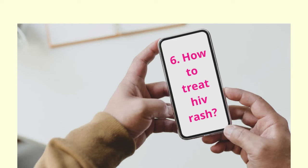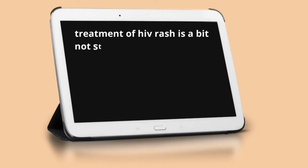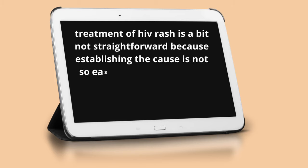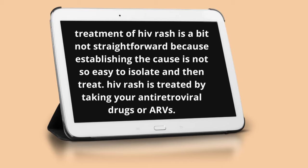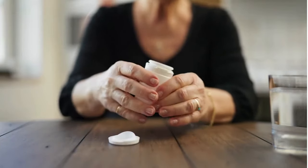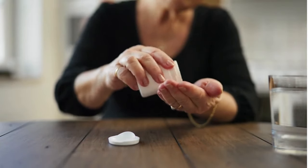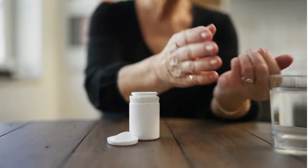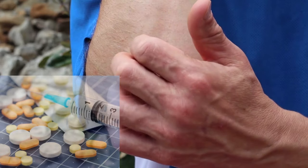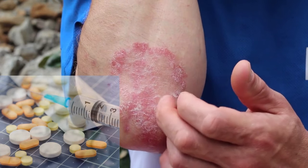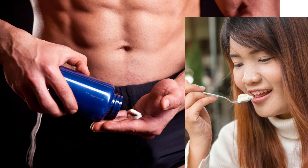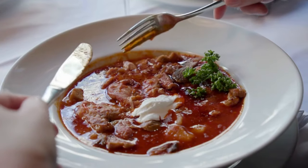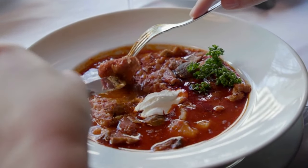How to treat HIV rash? Treatment of HIV rash is not straightforward because establishing the cause is not easy to isolate and treat. HIV rash is treated by taking your antiretroviral drugs or ARVs. Skin rash due to HIV medicine can be treated by either changing your medications, or temporarily stopping the medicines if the rash is causing you peeling skin. Your doctor will prescribe medicines like weak steroids or antihistamines if your itchy rash is due to certain medications, foods, and reactions to weather changes. The best way to avoid the itching is by avoiding all things that make your rash worse, like certain clothes, certain body lotions, certain medications, and foods to which your body reacts.